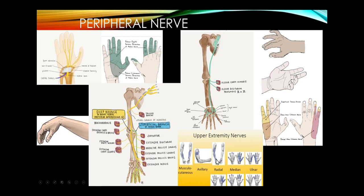It's worthwhile looking at the sensory distributions of these different nerves. Axillary neuropathy, which can occur with shoulder dislocation, causes weakness of the deltoids and a patch of numbness on the lateral arm.